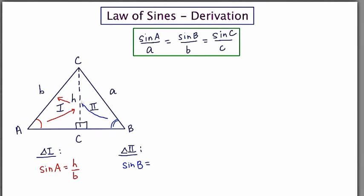My opposite side is h, but my hypotenuse is a. So the ratio of opposite to hypotenuse is h over a.